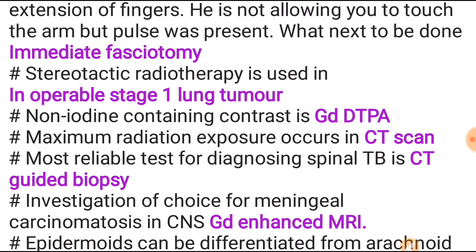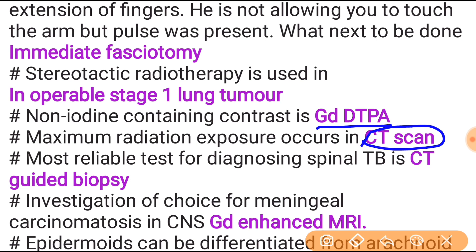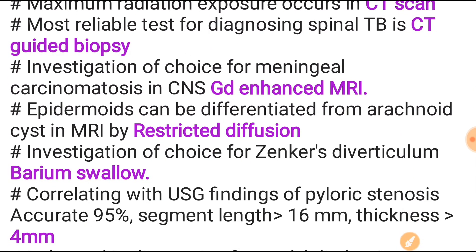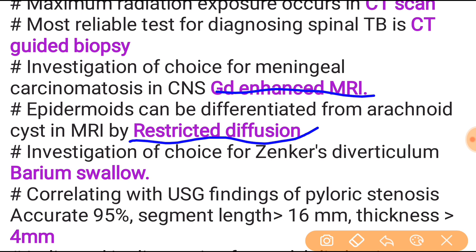Stereotactic radiotherapy is used in inoperable stage 1 lung tumor. Non-iodine containing contrast agent is Gd-DTPA. Maximum radiation exposure occurs in CT scan. Most reliable test for diagnosing spinal TB is CT-guided biopsy. Investigation of choice for meningeal carcinomatosis in the CNS is Gd-enhanced MRI. Epidermoids can be differentiated from arachnoid cysts on MRI by restricted diffusion. Investigation of choice for Zenker's diverticulum is barium swallow.